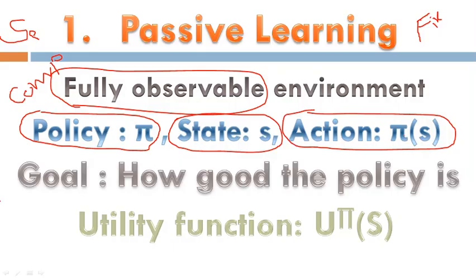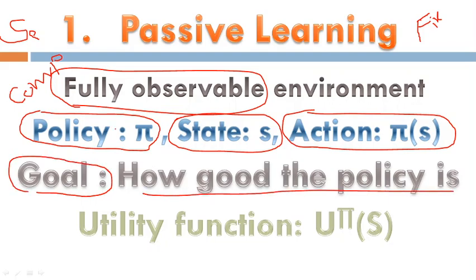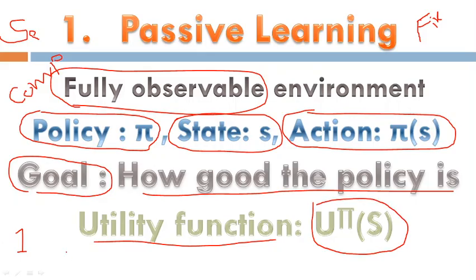We are applying the policy based on the state, and that results in an action. The main goal of passive learning is to evaluate how good the policy is. We apply a policy and check whether we are getting full utility, partial utility, or low utility — represented as U to the power pi of s. Based on that, we decide to apply another policy.